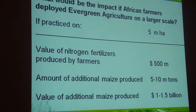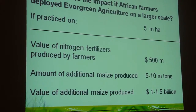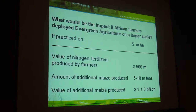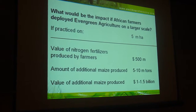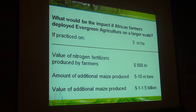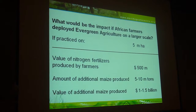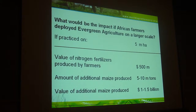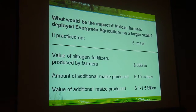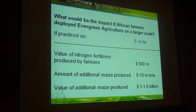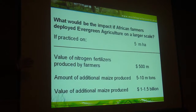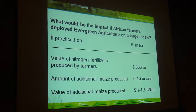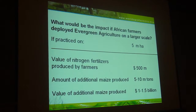What would be the impact, in fact, if these systems were used on larger areas of food crop production — from the few million hectares to perhaps the 50 million hectares of food crop agriculture in Africa? A question that the vice president of Tanzania asked when he came to visit us to talk about these systems a few months ago, and this slide represents our conservative analysis — our estimate of what the economic value would be, in terms of the value of nitrogen fertilizers produced by the trees that would therefore not be necessary to import into Tanzania, and the additional maize production to be expected.